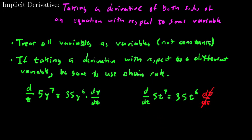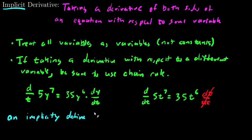Why is it called an implicit derivative? The idea is that we have an implicitly defined function. In this example, y is sort of implied to be a function of t in some way, shape, or form, as opposed to explicitly defined functions like y equals 5x, which is clearly a function y on the variable x. So let's see a couple of examples.